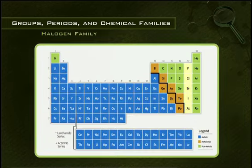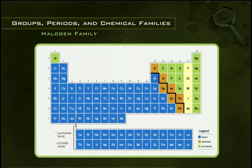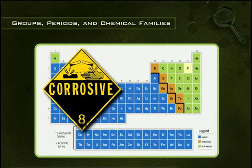Group 17 is the halogen family. Halogens are highly reactive because their atoms are one electron short of a full outer shell. They have very high electronegativities and are especially reactive to alkaline metals and alkaline earth metals. Fluorine, for instance, is one of the most reactive elements in existence — it is a corrosive and highly toxic gas.